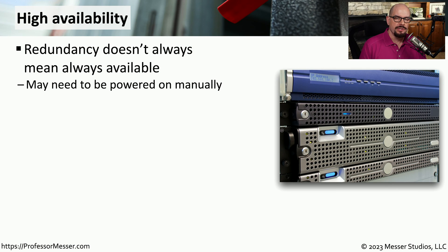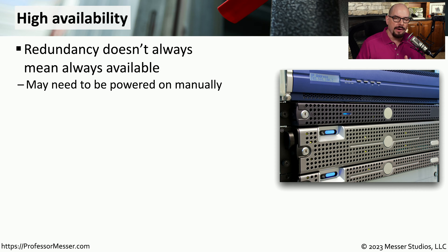If you work in information security, you're very focused on maintaining the uptime and availability of systems. One way to provide that level of resiliency is through the use of high availability. To plan for outages, some administrators will purchase multiple components so that if one component fails, they can easily bring in the other component to replace it. But that doesn't necessarily mean that everything remains up and running.